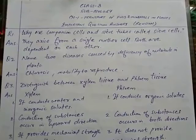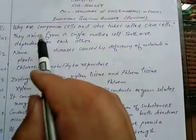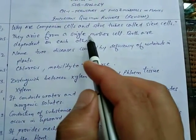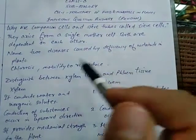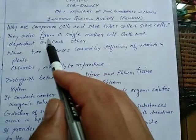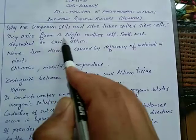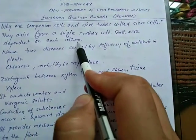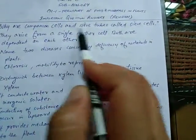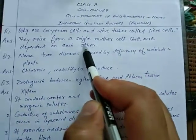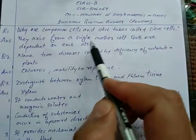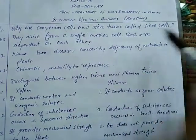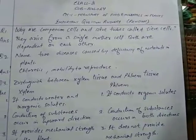Starting from the first question: Why are companion cells and sieve tubes called sieve cells? Because they arise from a single mother cell and they both are dependent on each other. That's why they are called sieve cells.